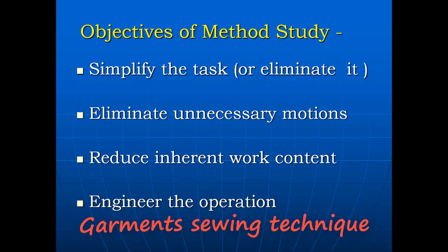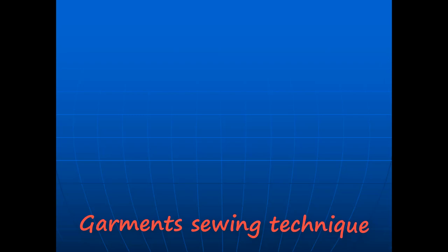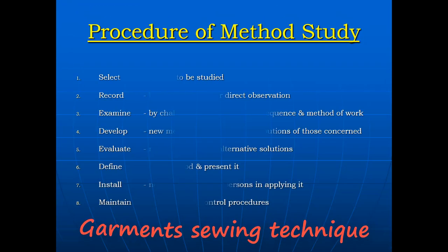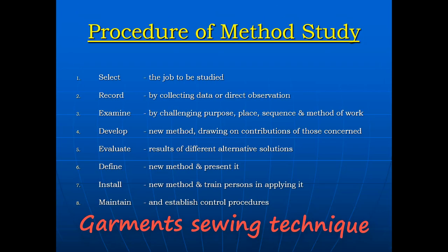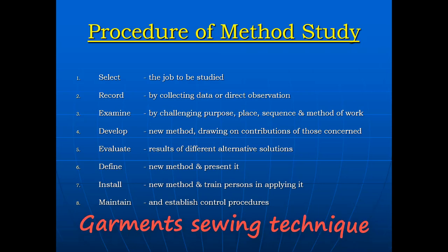Further objectives of method study include: reduce inherent work content and engineer the operation. Procedure of method study — Step 1: select the job to be studied. Step 2: record by collecting data or direct observation.